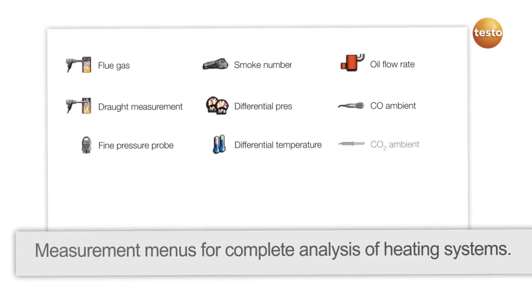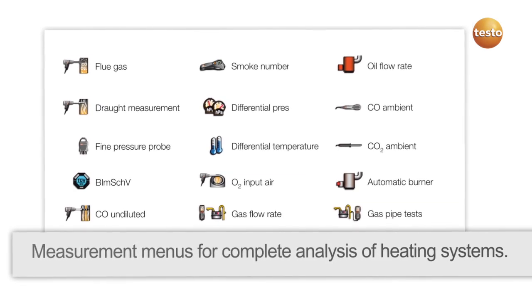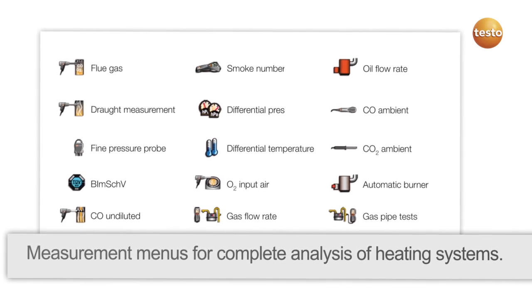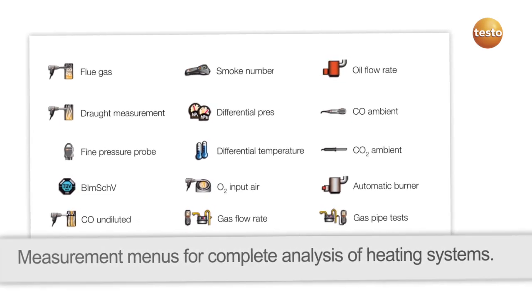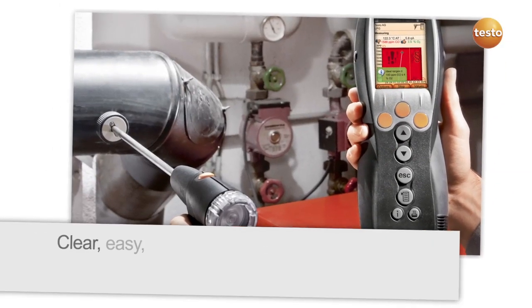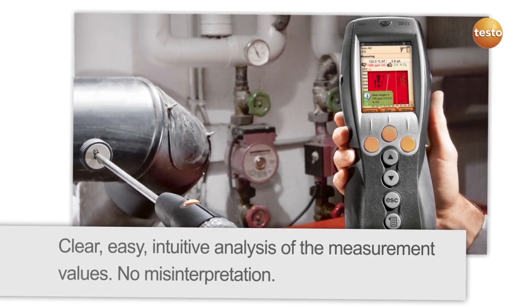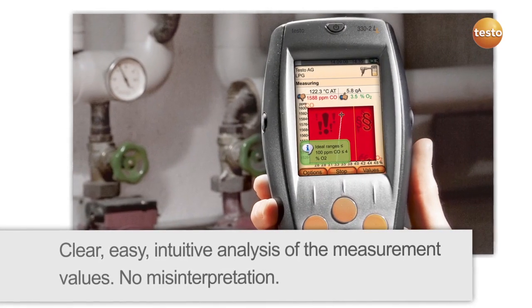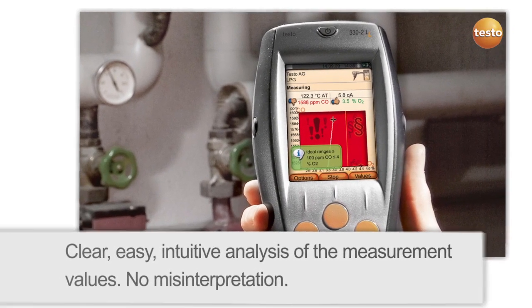The extended measurement menus allow a comprehensive analysis of the heating system, and the measurement data are clearly visualized on the display. This is shown by the following examples of typical measurement tasks. The CO concentration and the combustion shown here are poor. The Testo 330LL gives you the target values for the ideal combustion values.